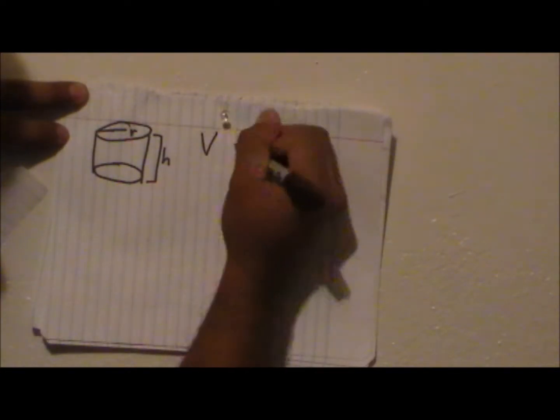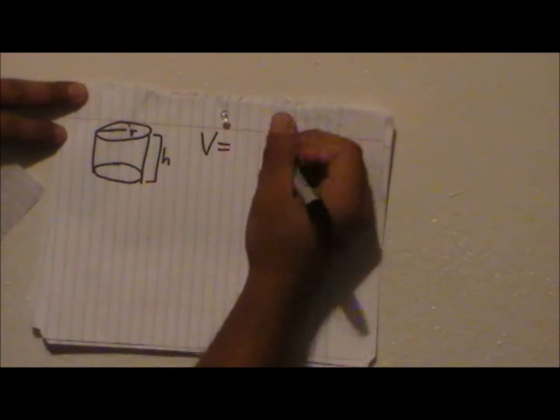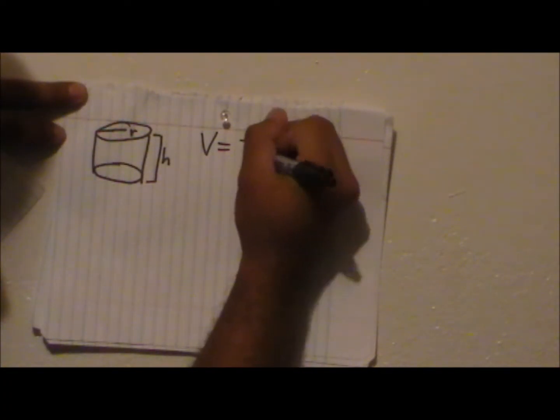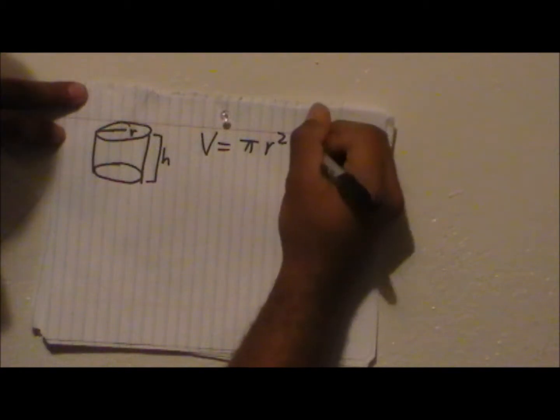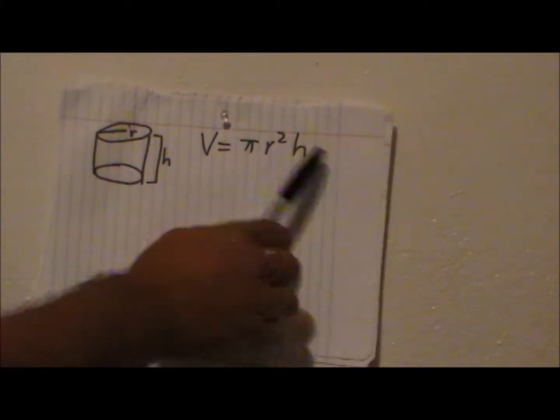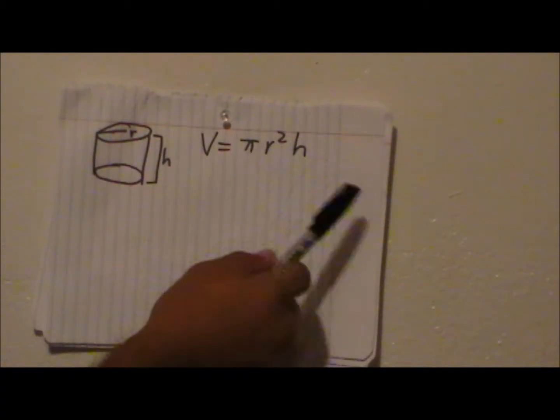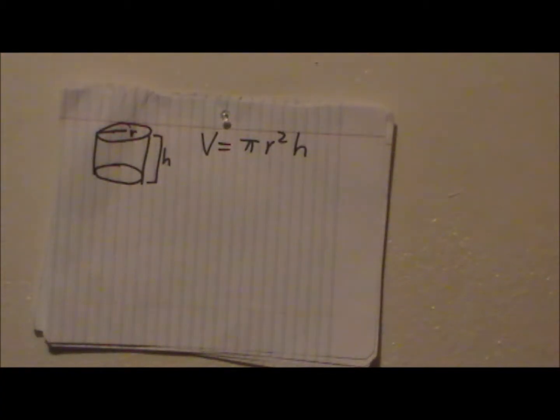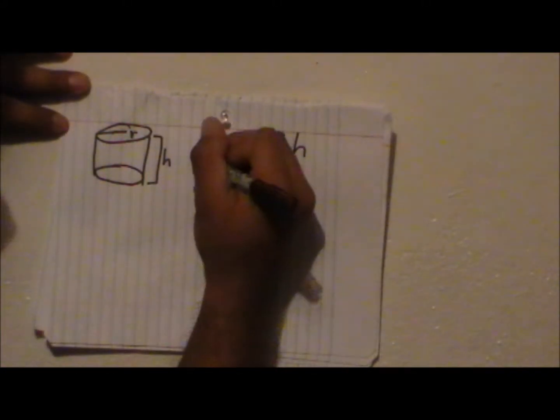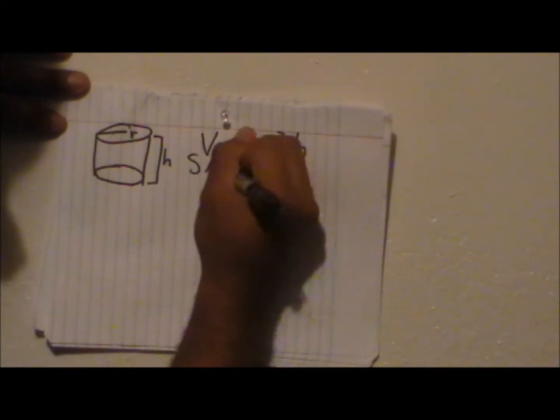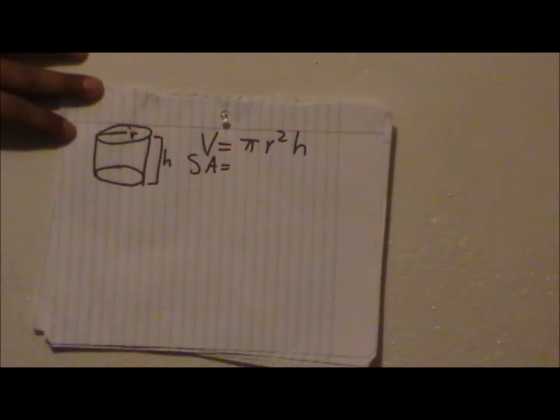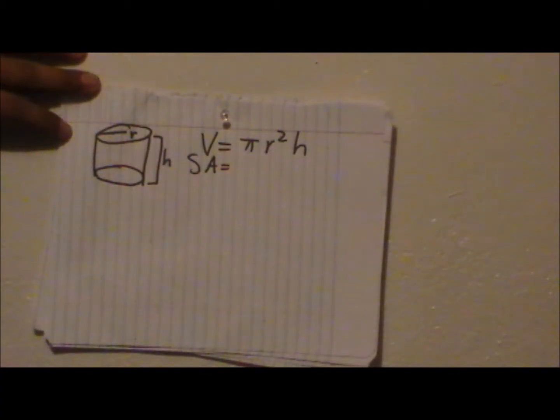So the formula for volume of a cylinder is pi r squared times the height, which we know neither of them. We don't know what r is, which is the radius. We don't know what height is. So in order to find those out, we need to find the surface area of the cylinder first in order to find these two.